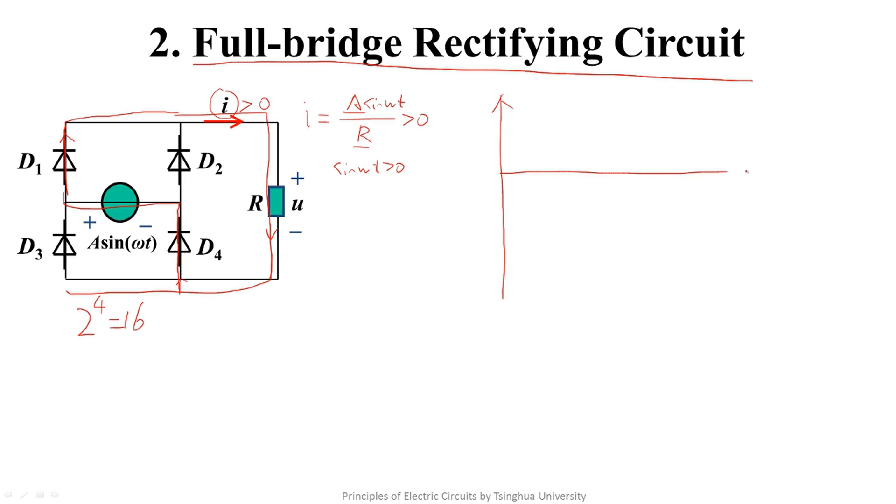We draw the waveforms of the signal source and the voltage of the load when sine omega t is greater than zero. We know it is a short circuit line. U equals U_s. This is it.